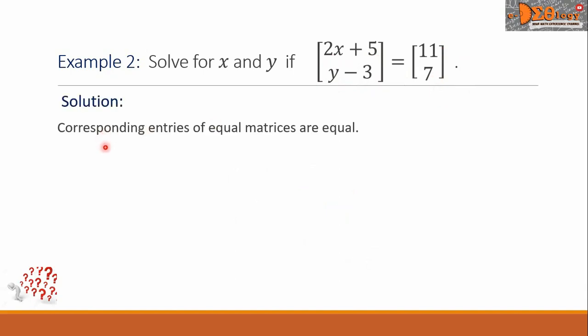Corresponding entries of equal matrices are equal, so we can write 2X plus 5 is equal to 11, and Y minus 3 is equal to 7.